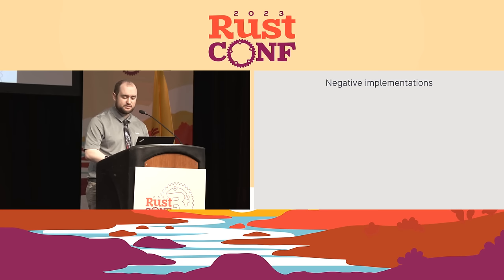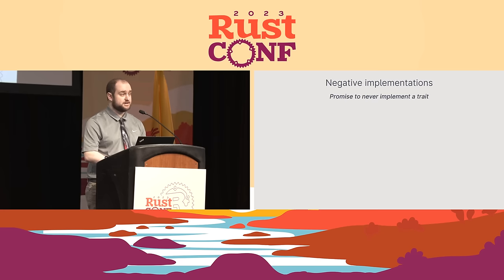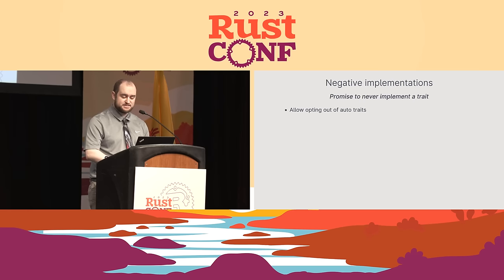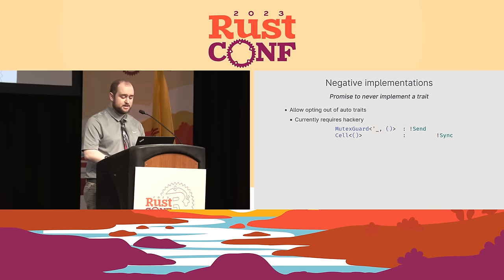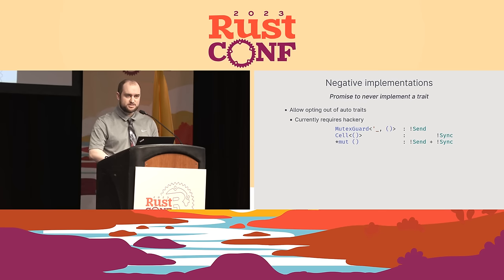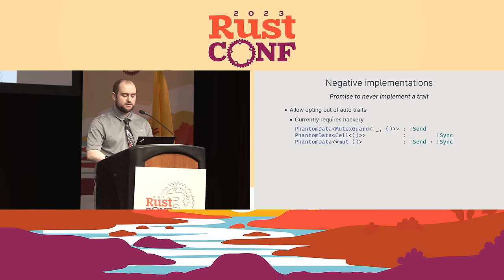On to something that is still on nightly, yet unlike most nightly features, is exposed within the public API of the standard library: negative implementations. Negative impls are functionally a promise to never implement a trait. Likely the most common use case is to opt out of auto traits, namely Send and Sync. This is technically possible already, but doing so is quite un-ergonomic as it requires a bit of hackery. The standard library contains types that have negative implementations of these traits — specifically, MutexGuard implements not Send, Cell implements not Sync, and raw pointers implement both not Send and not Sync. You can wrap these in a PhantomData, which does not exist at runtime, but it sure would be simpler if anyone could opt out of auto traits without this hack.